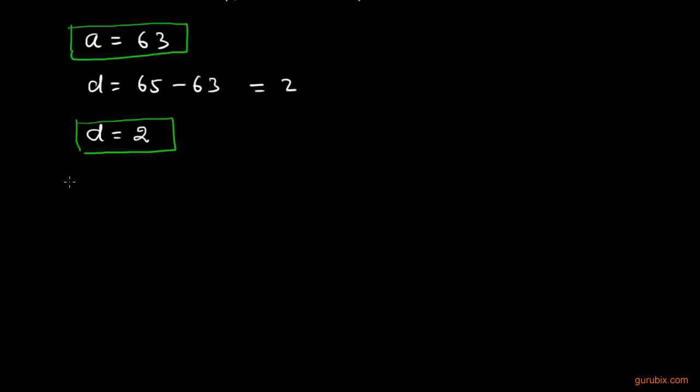Now we can find the nth term of this AP. That is aₙ equals a plus (n minus 1) times d. What is a? A is 63. We don't know the value of n and d is 2. So we can calculate it easily. This is 2n minus 2. Therefore this is 2n plus 61. This is the nth term of the first AP.